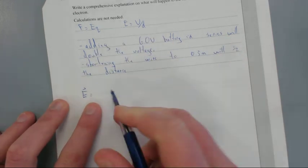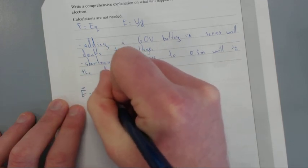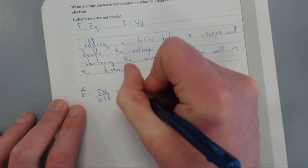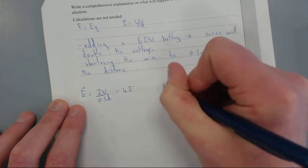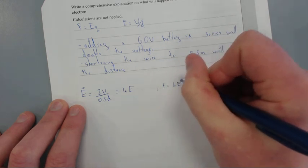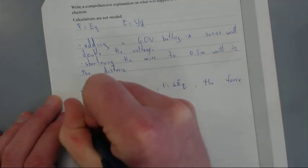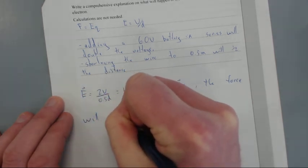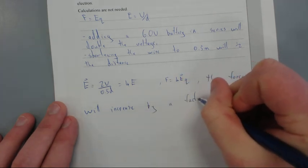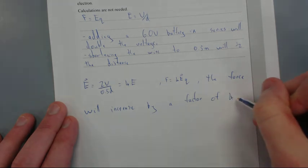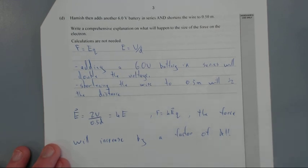In other words, E equals 2V over 0.5d, which is basically equal to 4E. If you plug that in, force equals 4EQ. The force will increase by a factor of 4. That answers the question.